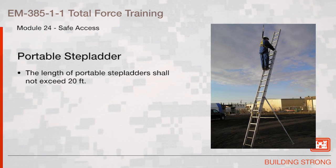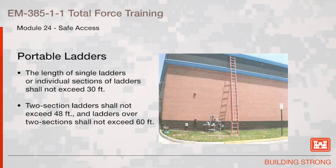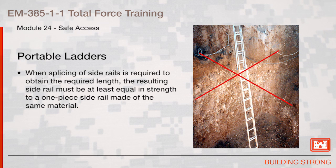In no case shall the ladder length be such that deflection under load would cause the ladder to slip from its support. The length of portable stepladders shall not exceed 20 feet. The length of single ladders or individual sections shall not exceed 30 feet. Two-section ladders shall not exceed 48 feet, and ladders over two sections shall not exceed 60 feet. When splicing of side rails is required, the resulting side rail must be at least equal in strength to a one-piece side rail made of the same material.